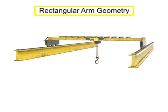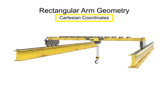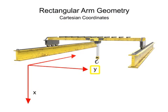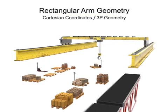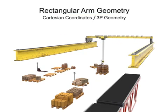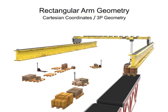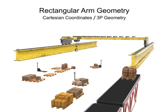Robots with rectangular arm geometry use Cartesian coordinates and move linearly along each of the X, Y, and Z axes. This type of movement is also called 3P geometry, where the P stands for prismatic or linear motion. This type of geometry is most commonly used with pick-and-place or large overhead-mounted robots.